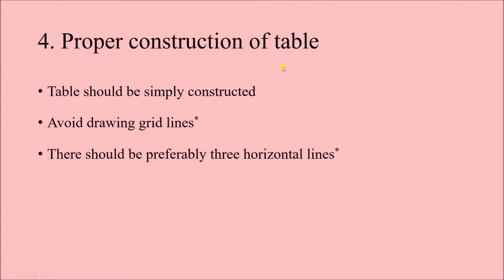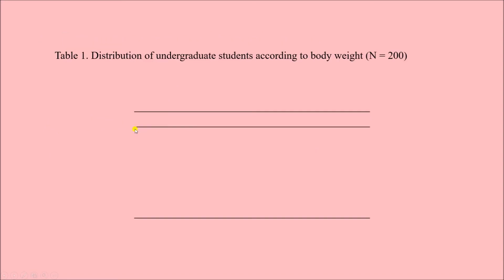This is followed by proper construction of the table. The table should be simply constructed — a simple-looking table is always more appealing. Avoid drawing grid lines; there should be preferably three horizontal lines. I have put aesthetic marks beside these sentences because they are not mandatory — there are many tables with more than three horizontal lines. In our example here, we have drawn only three horizontal lines with no other lines.